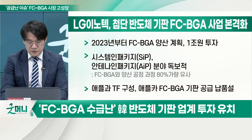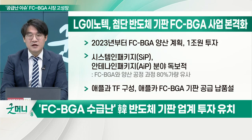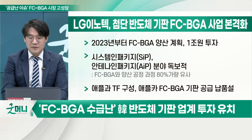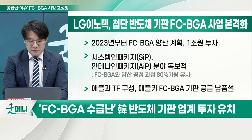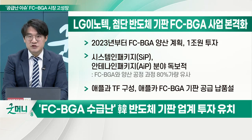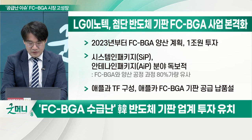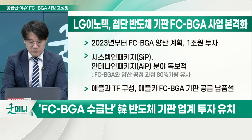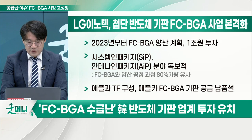LG이노텍은 원래 모바일 반도체용 플립칩 칩 스케일 패키지(FC-CSP)에 집중하고 있었습니다. 애플의 아이폰이 모바일 기기였기 때문에 기판과 칩의 크기가 같은 FC-CSP에 집중했죠. 그런데 이제 FCBGA — 기판 크기가 칩보다 더 큰 — 사업을 하겠다고 경북 구미 사업장에 대규모 생산시설을 구축하고, 2023년부터 FCBGA 양산 시작을 계획하며 1조 원을 투자했습니다.